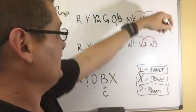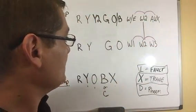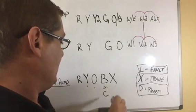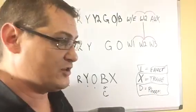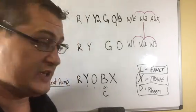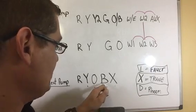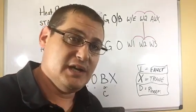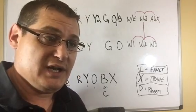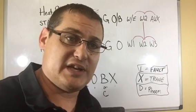This is a Train example. Train uses X to power up the strip heat whenever there's a call for defrost. One thing that Train does that's a little bit different is they use B for their common, and they'll actually, I think they even use the blue wire for common. Like I said before, as long as you know what the terminal's doing, that's really all you need to know. Colors really don't matter. It just makes it easier.